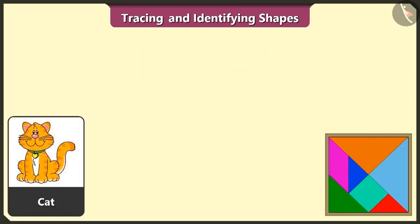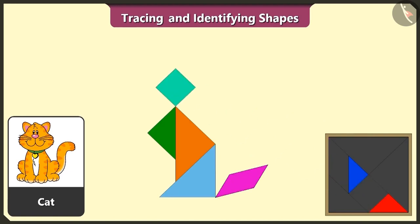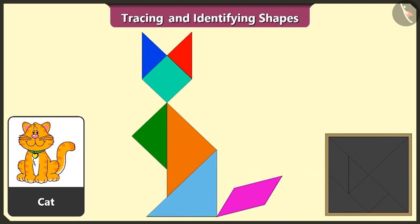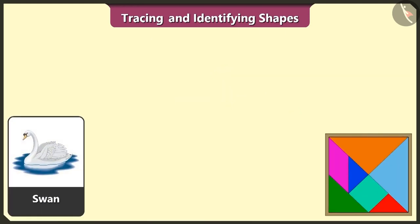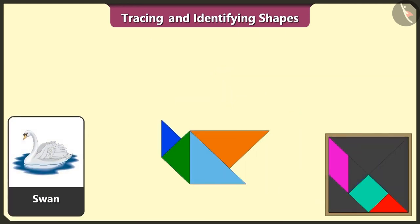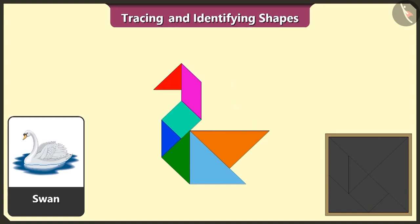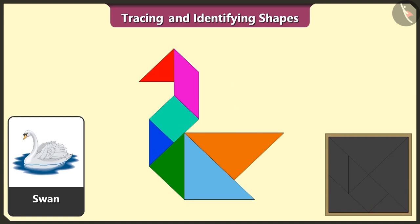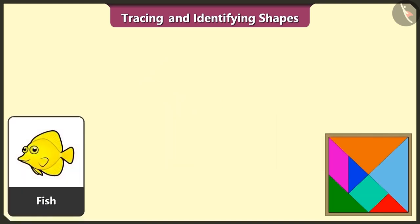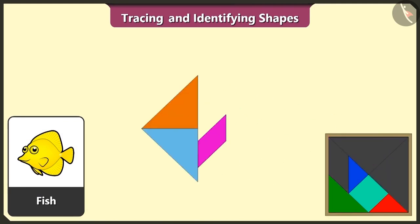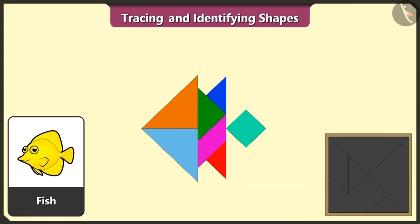This is a cat — let's make a cat using 3 triangles, 1 quadrilateral, 1 square and the remaining 2 triangles. See, cat is ready. This is a swan — now, we will make a swan using 4 triangles, 1 square, 1 quadrilateral and 1 triangle. Swan is also ready. This is really interesting. This is a fish — let's try and create a fish using 2 triangles, 1 quadrilateral and 1 triangle, 2 more triangles and 1 square. And we have created a fish.